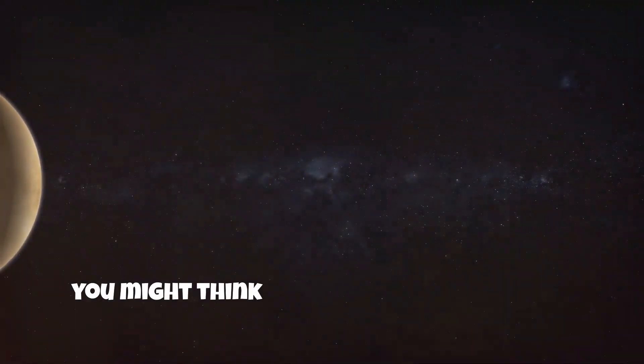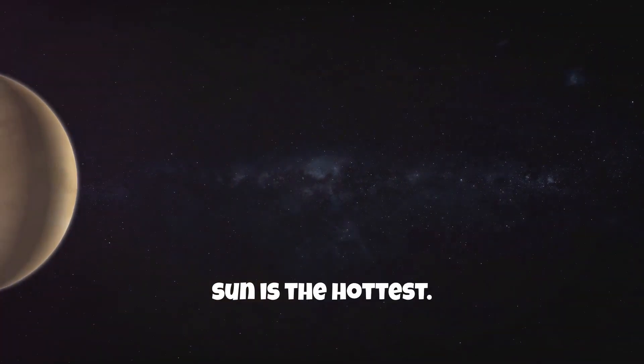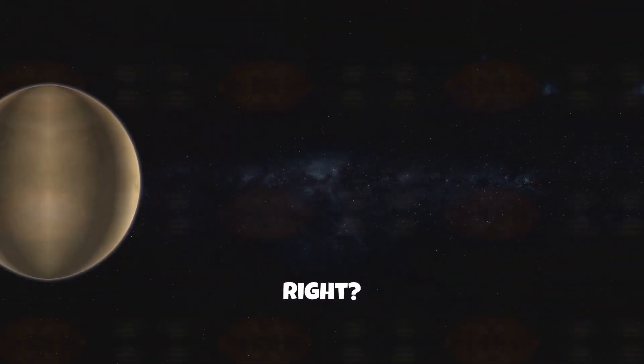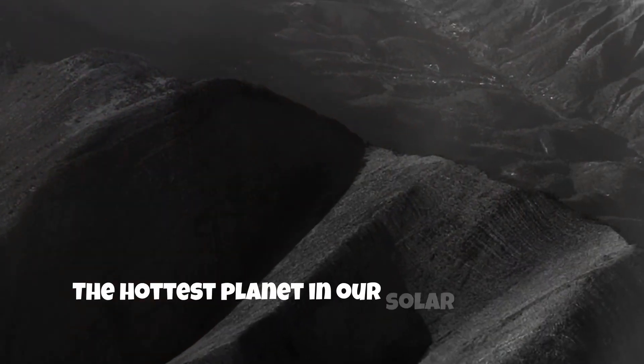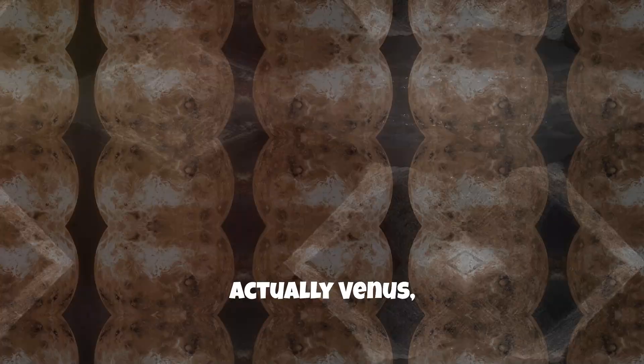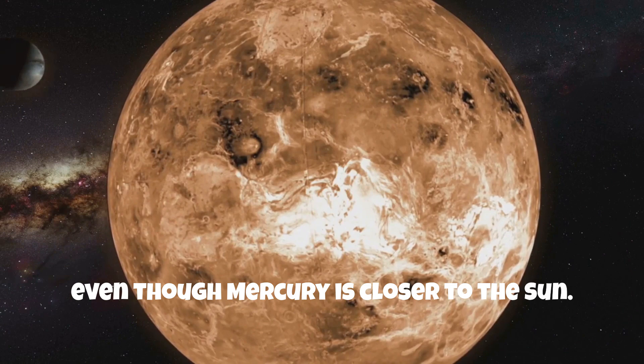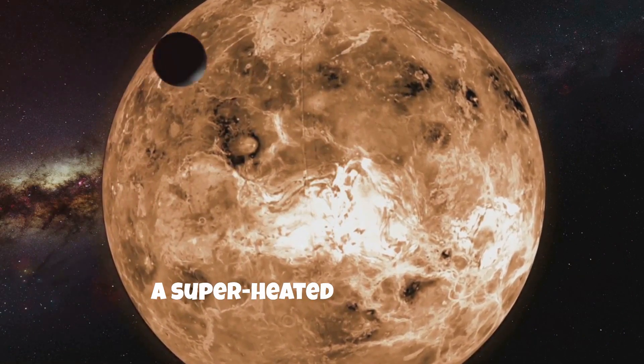Now, you might think the planet closest to the sun is the hottest. Makes sense, right? But the cosmos loves to defy expectations. The hottest planet in our solar system is actually Venus, even though Mercury is closer to the sun. Why? A superheated atmosphere.